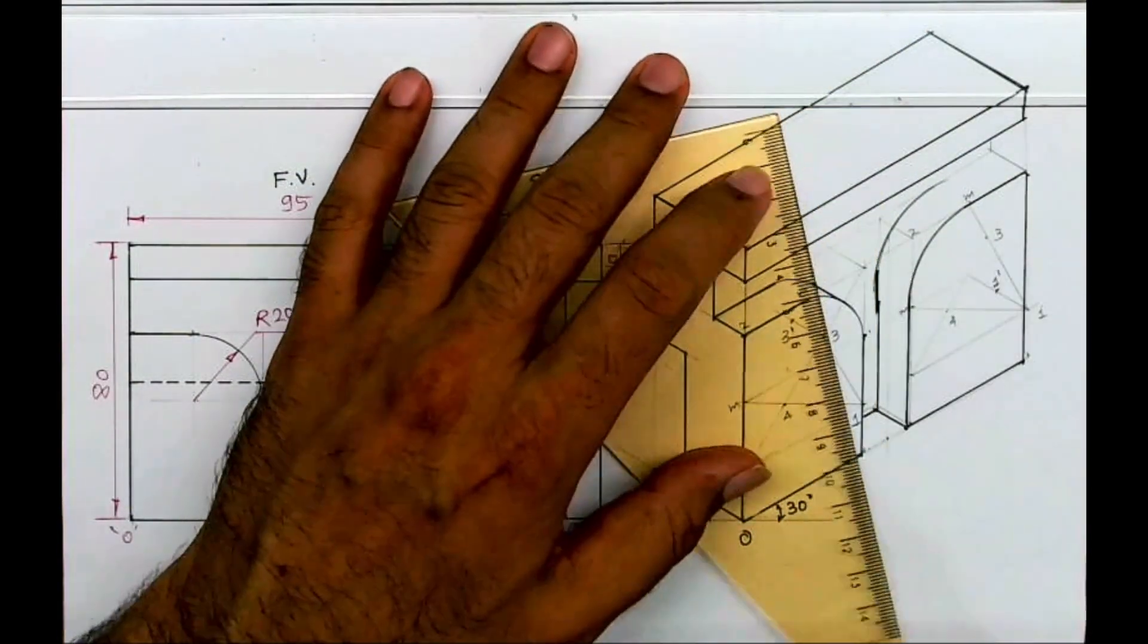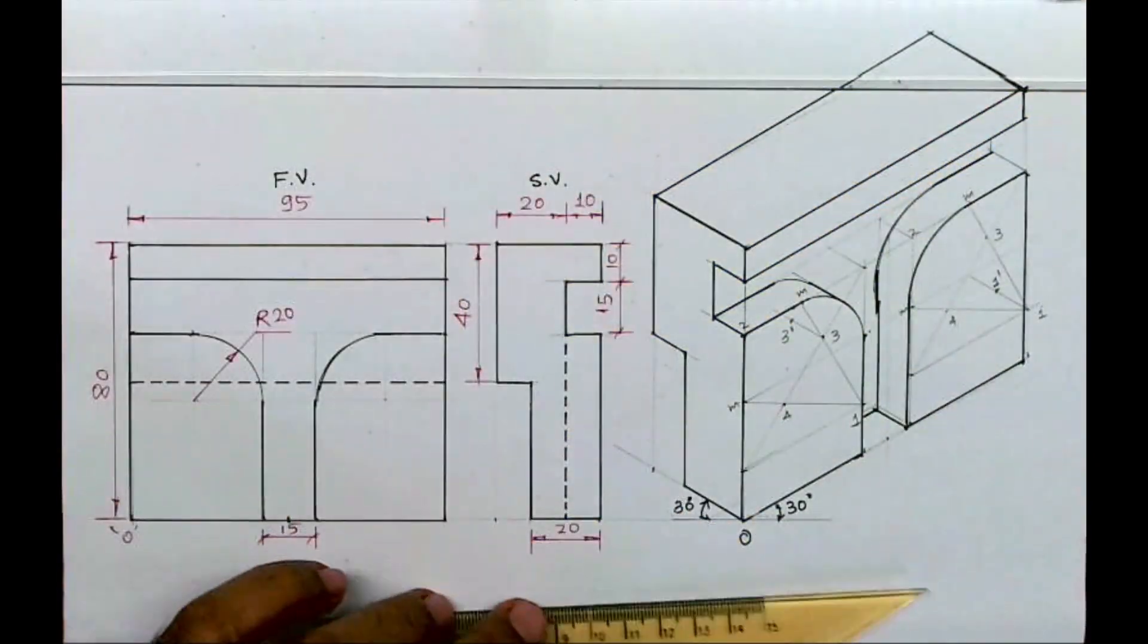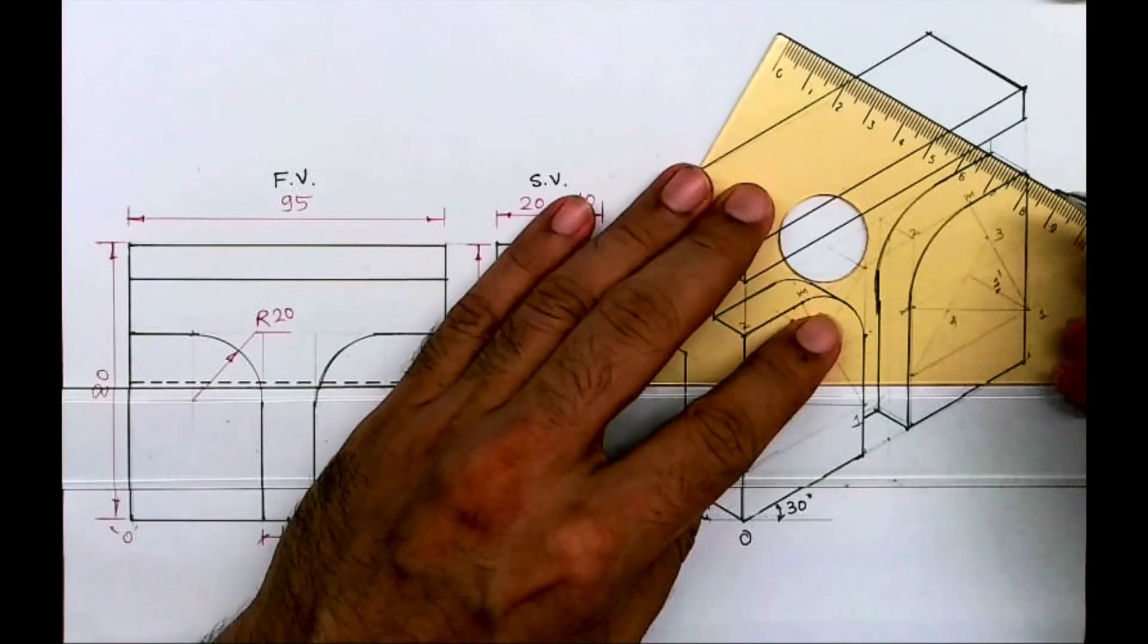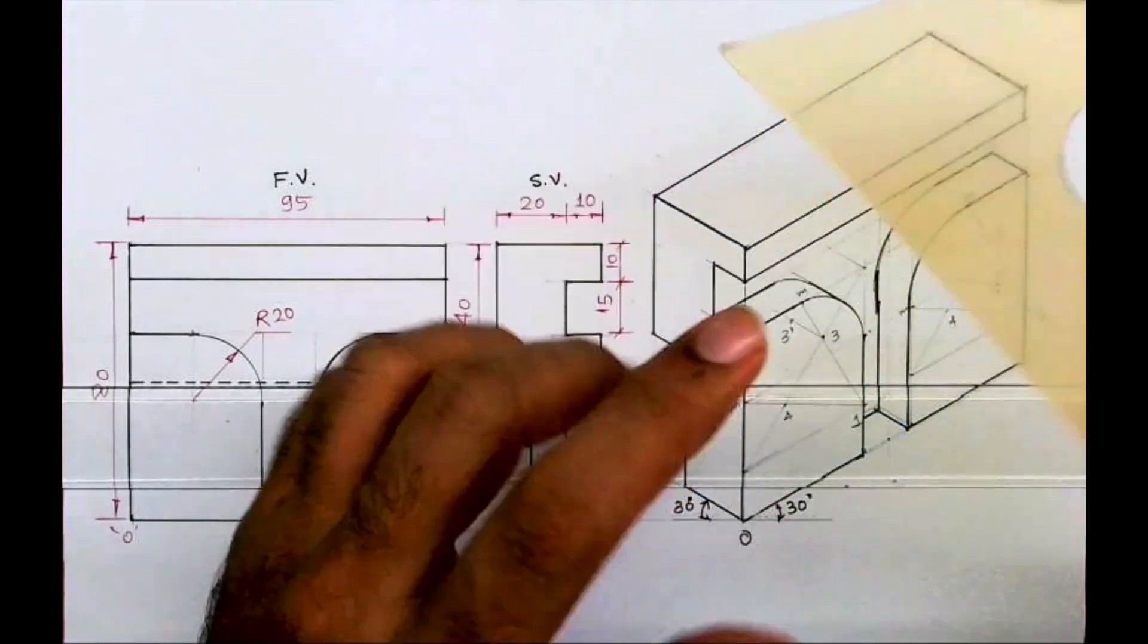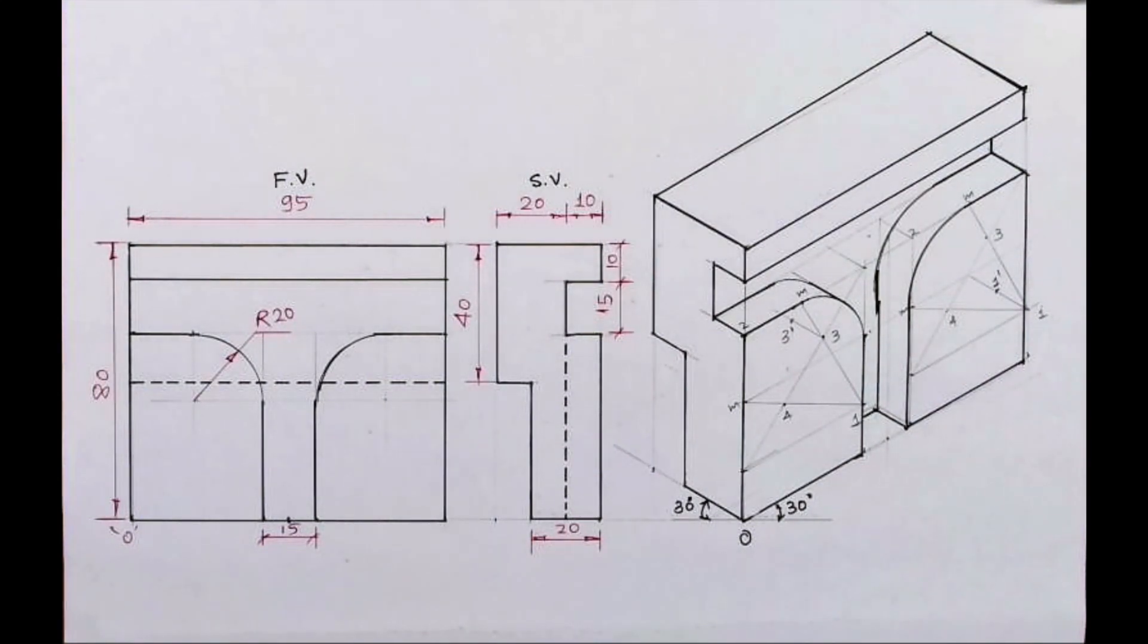We'll extend this line down. From here we'll join like this. So this way we got this isometric. I hope all of you understood this. Thank you.